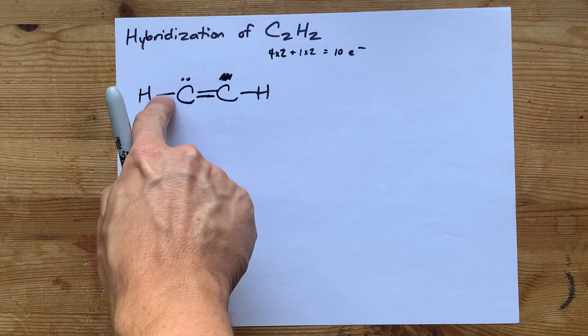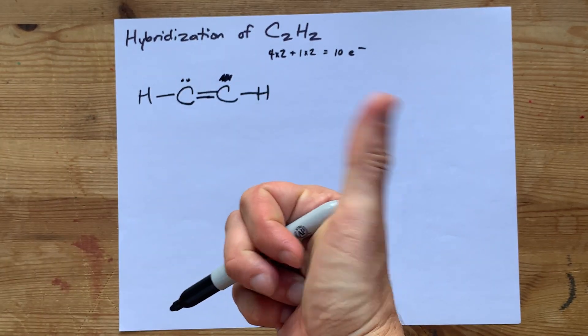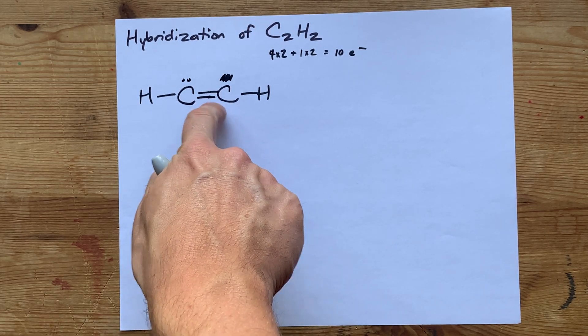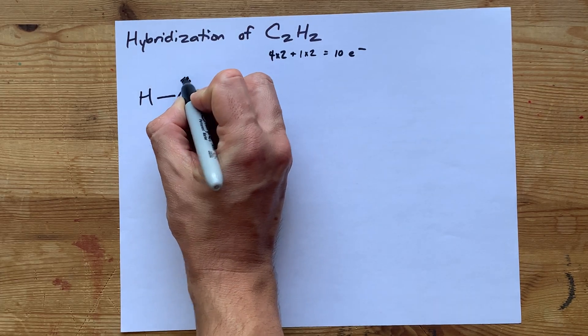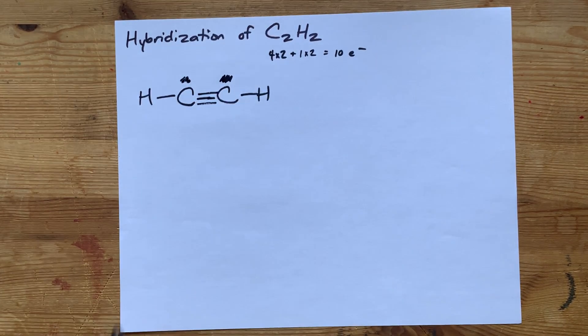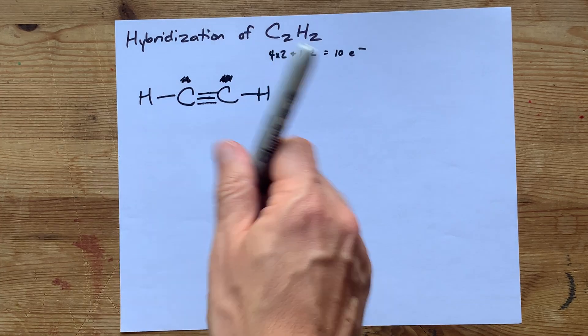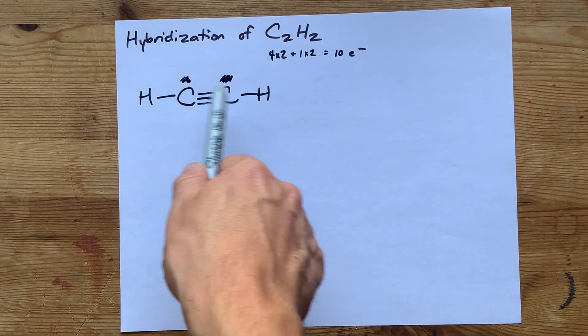So I'm going to move this lone pair into a double bond. Now, this carbon has 2, 4, 6, 8 electrons around it. But this carbon still only has 2, 4, 6. To obey the octet rule, we need to move that one in as well. So this is the Lewis structure for C2H2.